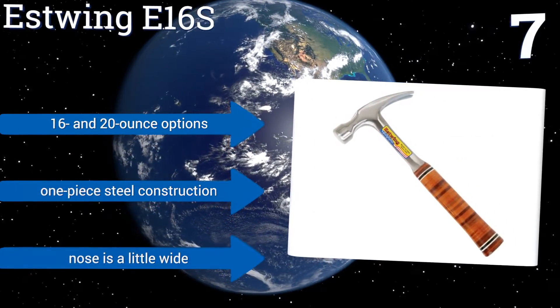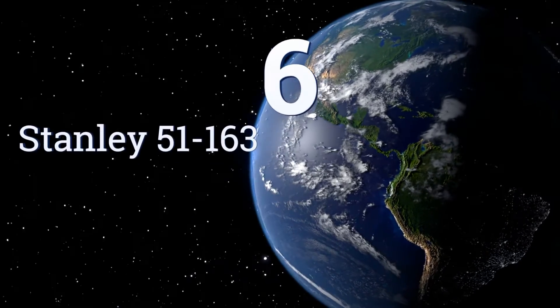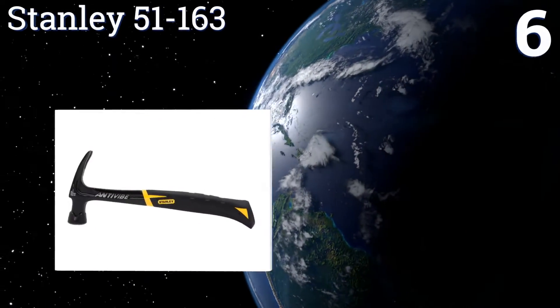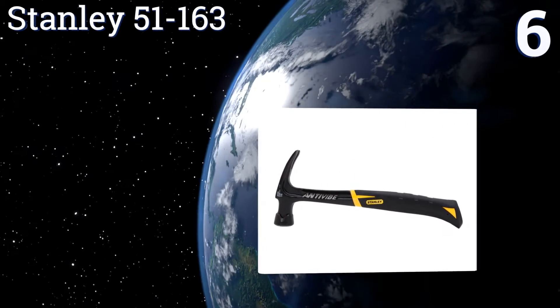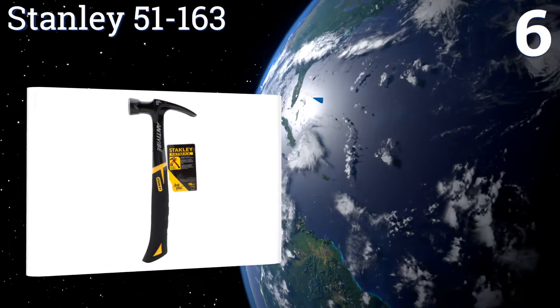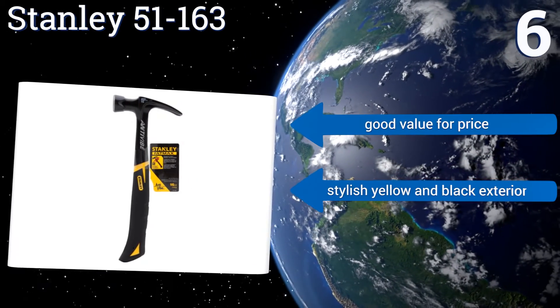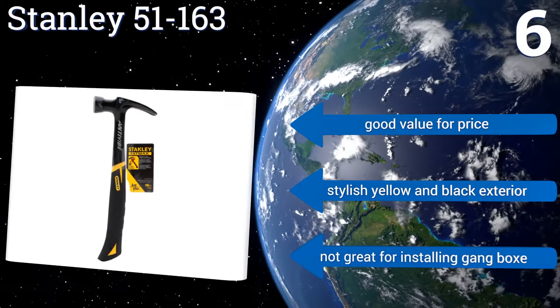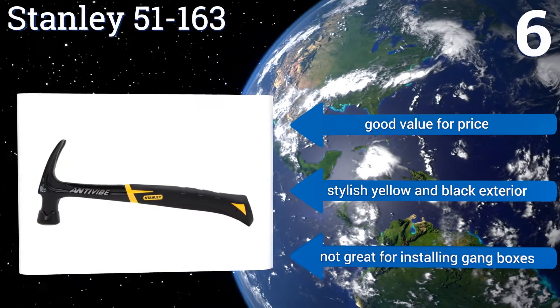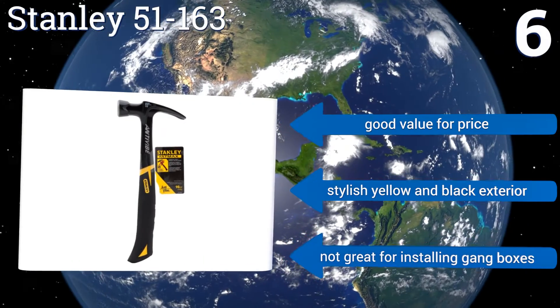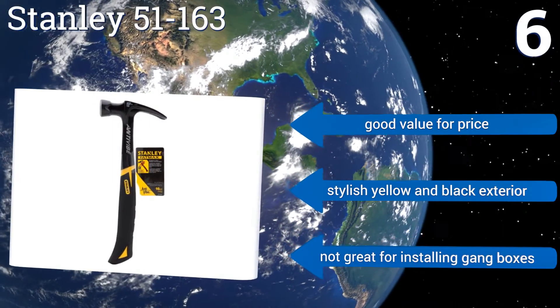Coming in at number six on our list, though its face is a little too wide and its neck a little too short to be considered an electrician's hammer specifically, the Stanley 51 163 is unique in that it's extremely shock and torque resistant, featuring the brand's patented technology to protect against both. It's a good value for the price and comes in a stylish yellow and black exterior. However, it's not great for installing gang boxes.